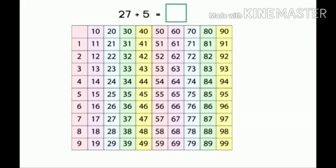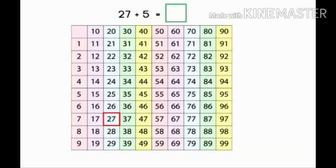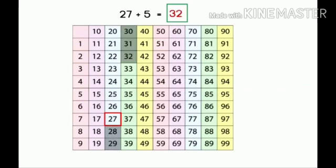Next, 27 plus 5. We start at 27, then we count 5 numbers forward: 28, 29, 30, 31, 32. Children, where did we reach? 32. That is our answer. 27 plus 5 is equal to 32.